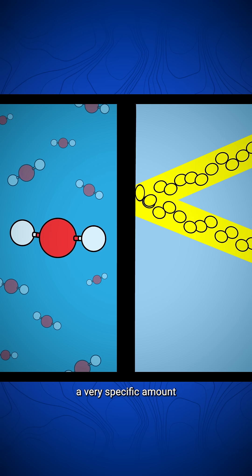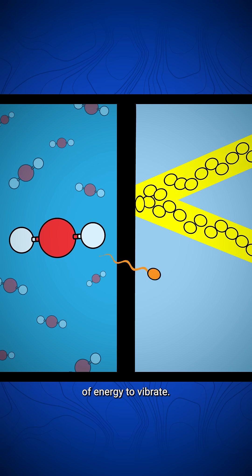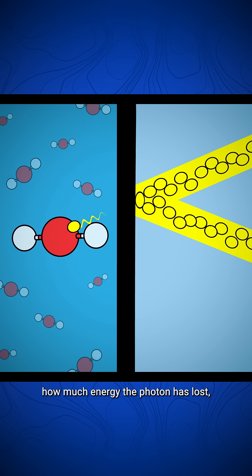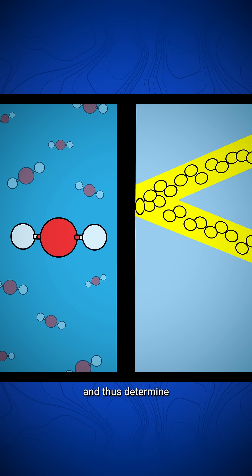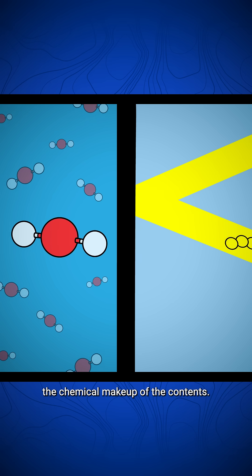Each molecule requires a very specific amount of energy to vibrate, so by measuring how much energy the photon has lost, scientists can tell what the molecule is and thus determine the chemical makeup of the contents.